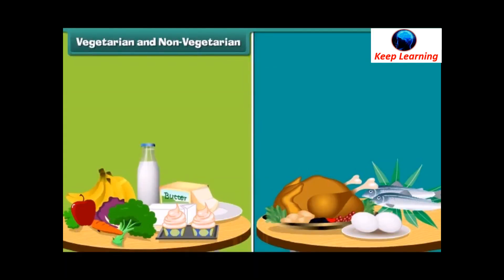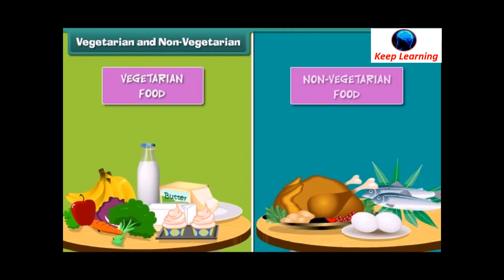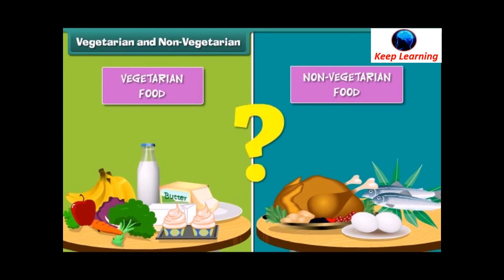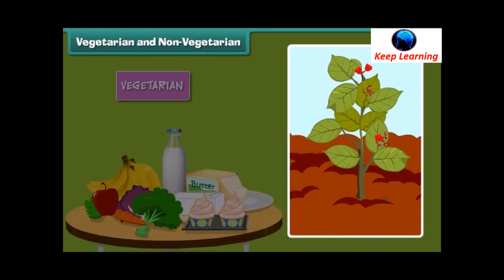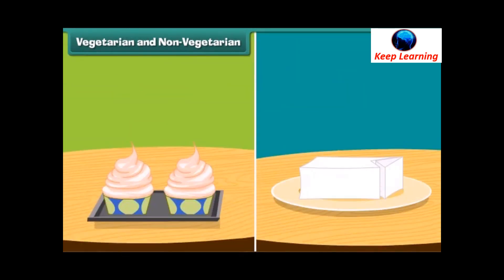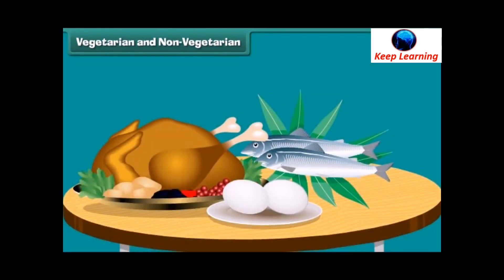There are two types of food — vegetarian or non-vegetarian. Fruits, vegetables, milk, and all milk products are vegetarian. Generally, we get vegetarian food from plants. Your favourite cheese and ice cream is a vegetarian food. Eggs, chicken, meat, and fish are non-vegetarian food. We get non-vegetarian food from animals.